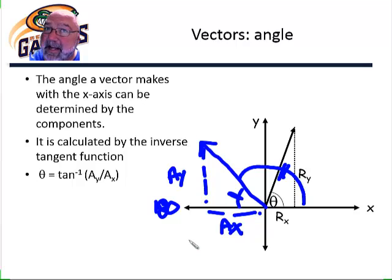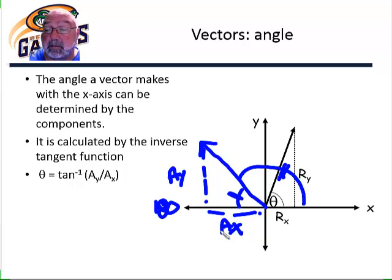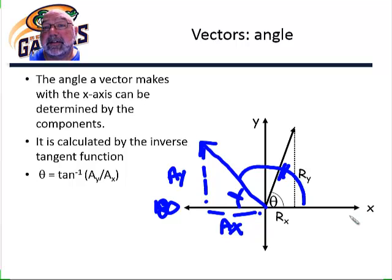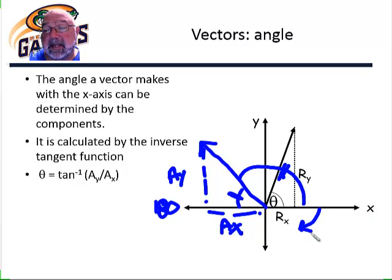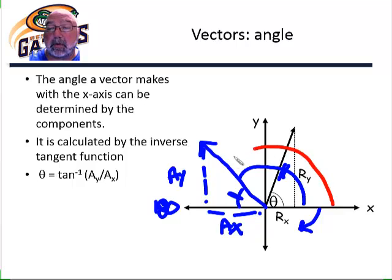Third quadrant, same idea — we're going to get a positive angle, and we add it to 180 degrees; that will put our vector properly in the third quadrant. If we're in the fourth quadrant, we add the angle to 360 degrees. Our calculator will give us some negative angle between 0 and negative 90. We add it to 360, and that gives us the proper polar angle.